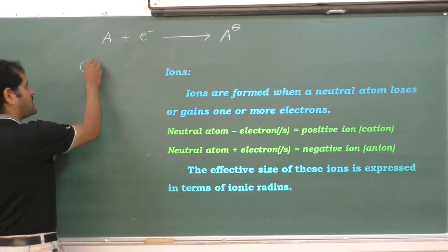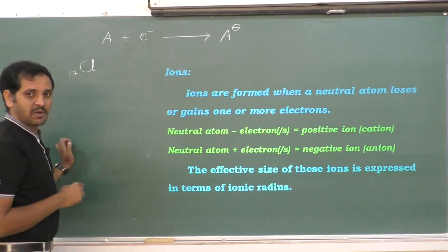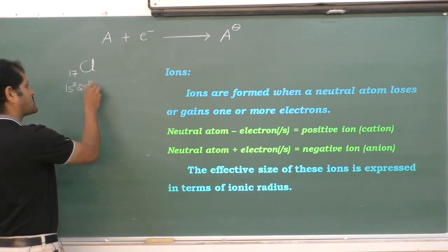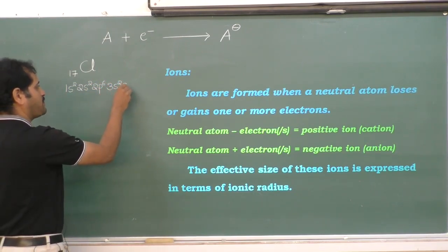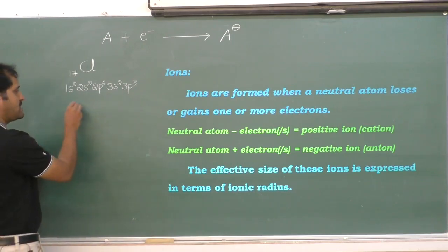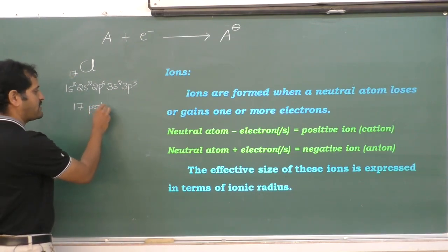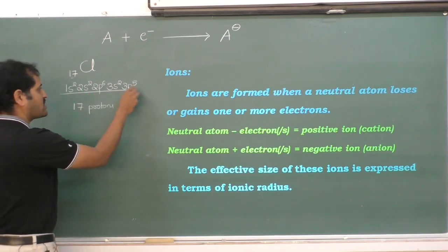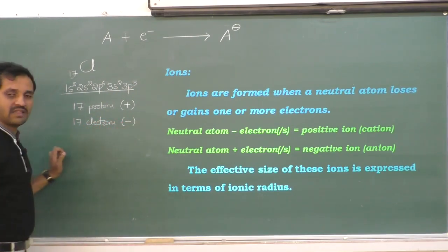For example, consider the chlorine atom. Its atomic number is 17 and its electronic configuration is 1s2 2s2 2p6 3s2 3p5 — totally containing 17 protons, meaning 17 positive charges. The electronic configuration indicates it contains 17 electrons, meaning 17 negative charges.